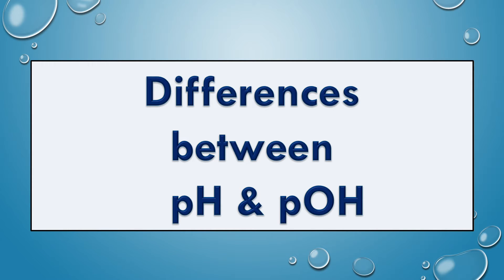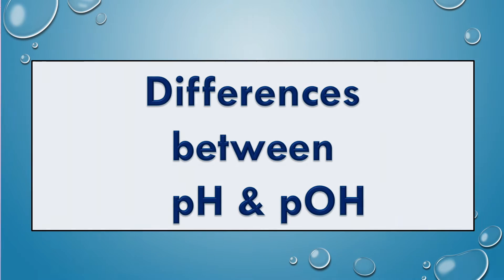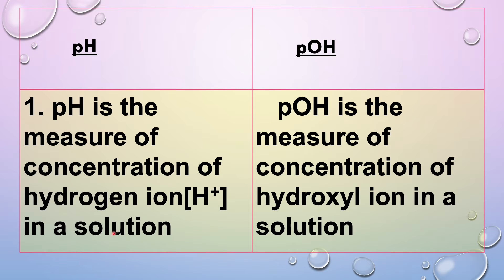First, let us see what is pH. pH is the measure of concentration of hydrogen ion (H⁺ ion) in a solution, whereas pOH is the measure of concentration of hydroxyl ion (OH⁻ ion) in a solution.